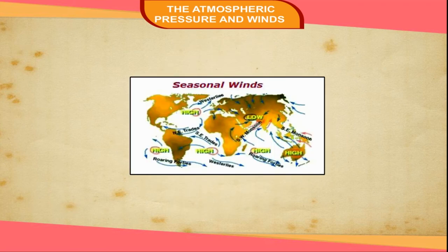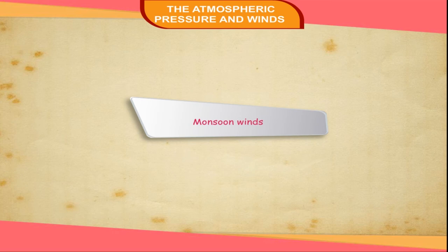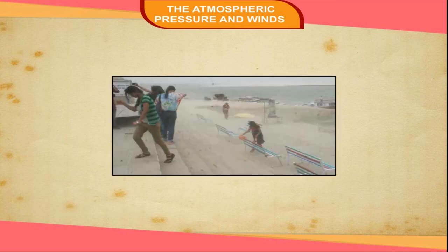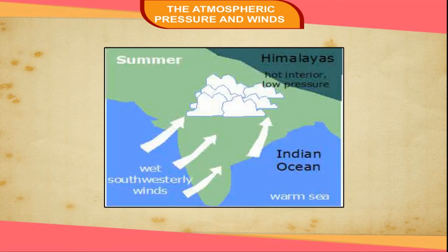Local Winds: Winds that arise due to local or regional changes in temperature and pressure are known as local winds. They affect small areas over a shorter period of time. Some local winds like monsoons, land and sea breezes are periodic. They are also called seasonal winds. Monsoon Winds: The word monsoon is derived from the Arabic word 'moosem', meaning season. They blow from sea towards landmass in one season and then from land towards sea in the other season of the year. The complete reversal of these winds is their characteristic feature.